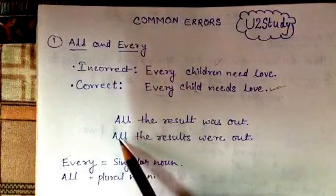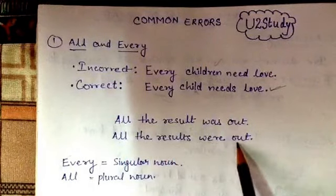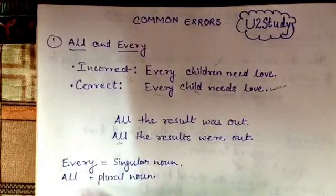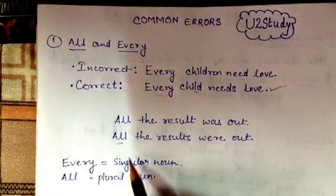This will be the correct form: all the results were out. Because all is always followed by a plural noun. All is always written with a plural noun.